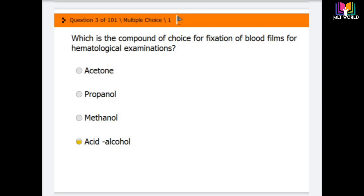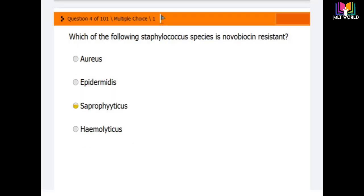Question number three: Which is the compound of choice for fixation of blood film for hematological examinations? Options are acetone, propanol, methanol, and acid alcohol. The correct option is acid alcohol. Acid alcohol is the compound of choice for fixation of blood film for hematological examinations.